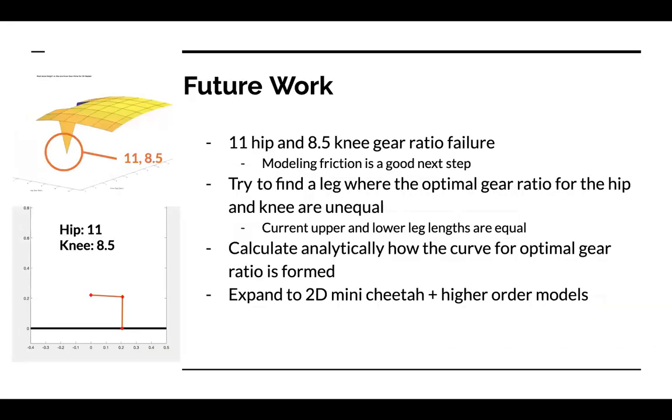There are still many directions to explore with this project. First, we noticed that at a hip gear ratio of 11 and a knee gear ratio of 8.5, the solver consistently found a solution that jumped much lower than the rest. We think this is due to slipping. Searching in an area around the solution yielded no possible answers or trends, but it's important to realize the optimizer doesn't consider friction. We think adding friction is a good next step.